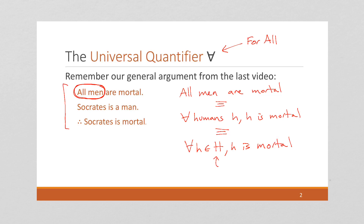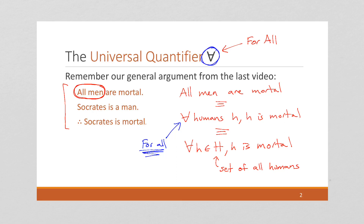Here, H is the set of all human beings. This is a literal translation for 'for all.' Anytime you see that upside-down A, you can just read it like that. You can find this symbol in your computer — usually in the symbols section, or in mathematical equations.